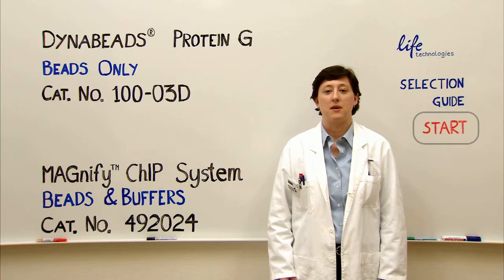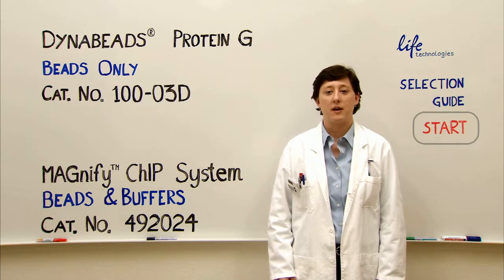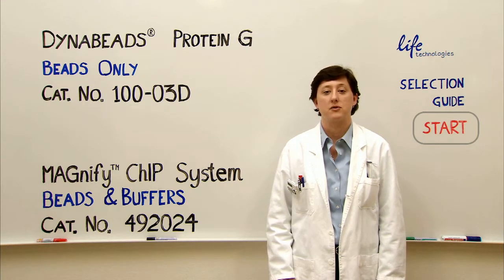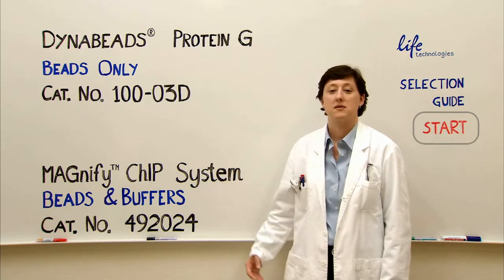The Protein G beads can be used with both high and low cell numbers. If you're working with low cell numbers from 10,000 to 300,000 and you're looking for a solution that includes pre-made buffers for maximum ease of use, we recommend that you use the MAGnify ChIP system.